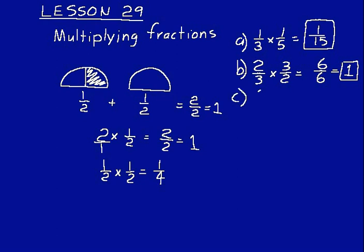Let's try six times one fifth. Remember what we do when we have a whole number like a six: we make that into a fraction by just putting a one underneath it. Six over one is equal to six. Now we multiply the numerators together: six times one equals six. Multiply the denominators: one times five equals five. Six over five. We could leave that answer as six fifths, or we could write that as a mixed number. Five goes into six one time with a remainder of one, so we'd write that as one and one fifth.